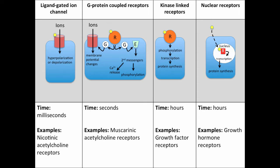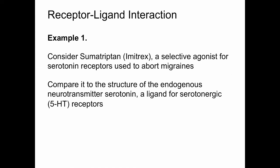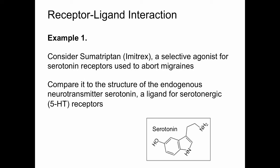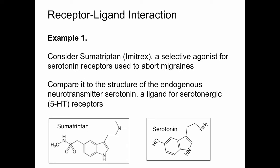We see the importance of ligands and how they can modulate and mediate signaling cascades by binding to receptors. But I want to challenge your thinking about ligands and ask: is a drug a ligand? Many drugs act like ligands, either activating or preventing activation of receptors. For example, consider the drug sumatriptan, also known as Imitrex. Sumatriptan is a selective agonist for serotonin receptors, and it's used to abort migraines. If we compare the structure of serotonin, the endogenous neurotransmitter for serotonergic receptors, to that of sumatriptan, we see that indeed drugs can act like ligands.